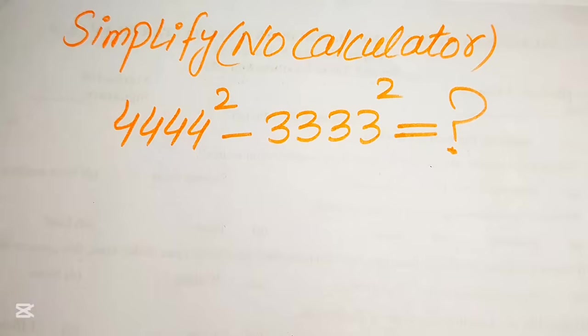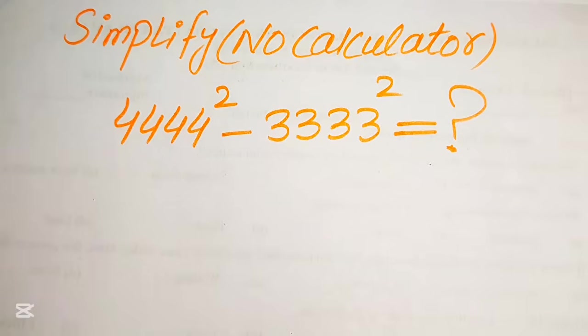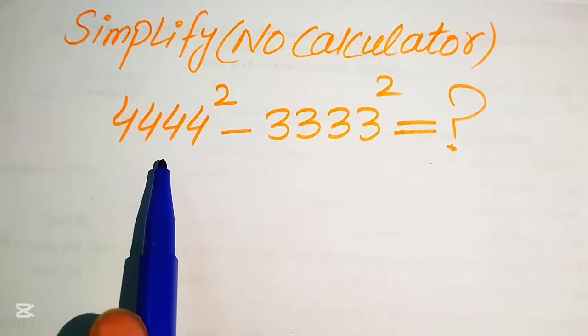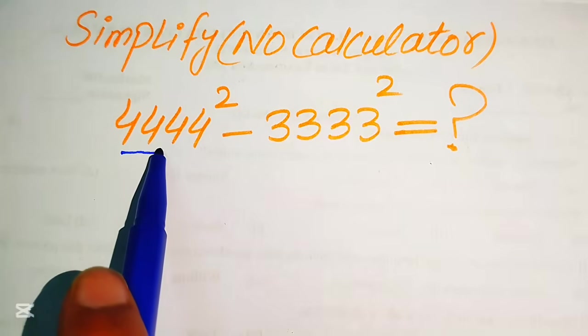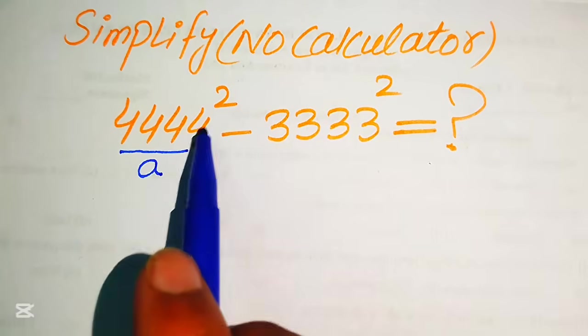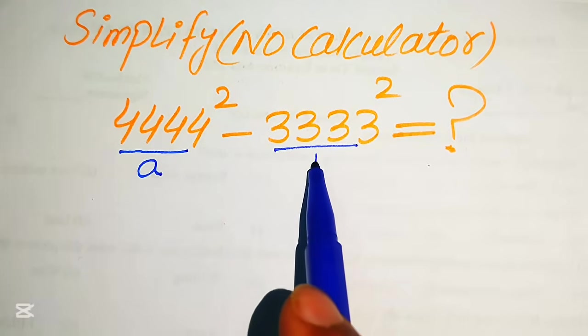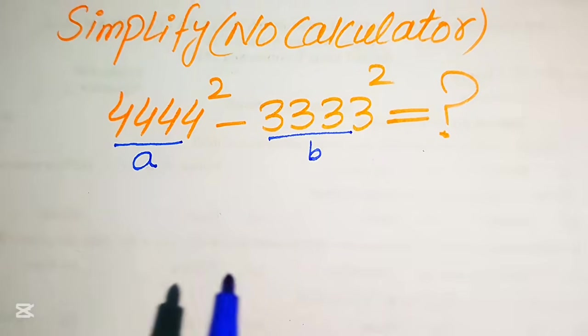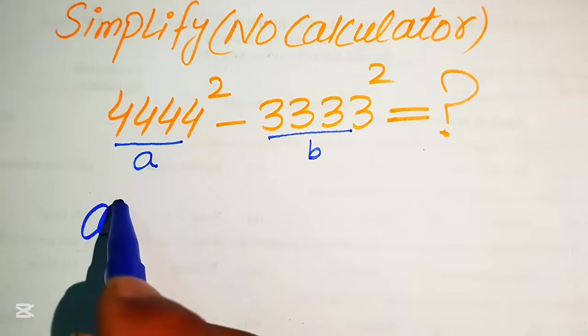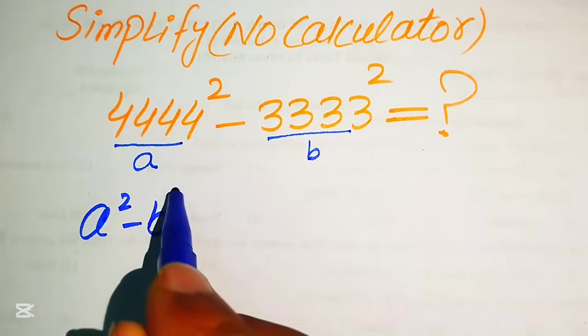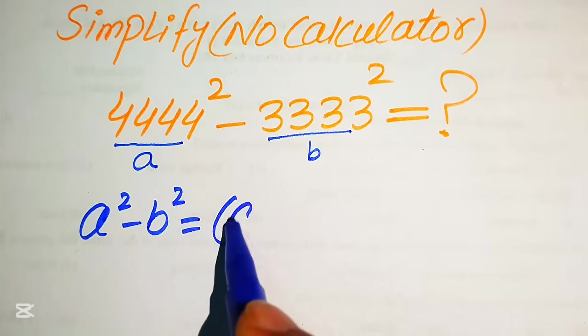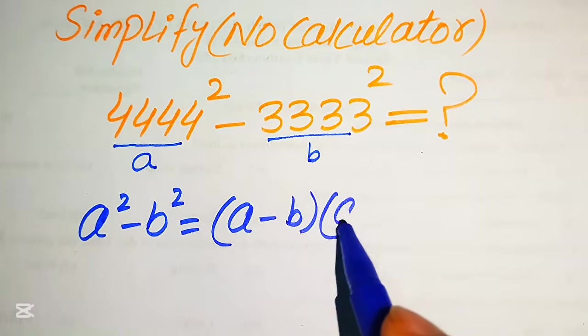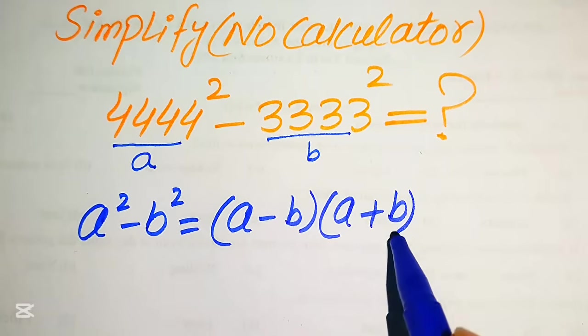The very first step we are going to do is here. First you see that we have, you can take this value is a, this base is a and we will take this base is b. Then we apply here the algebraic formula. You know that if we have a square minus b square it is equals to a minus b times of a plus b.